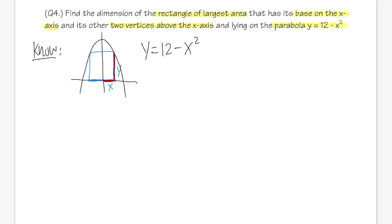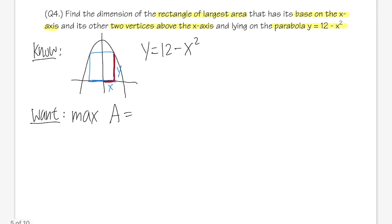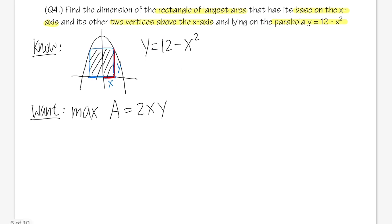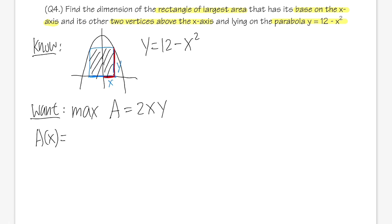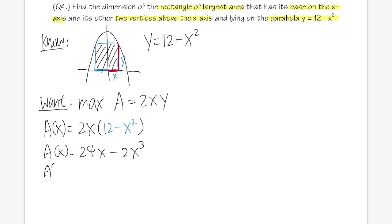The area of the rectangle: the full base is 2x (since x is only the half-width), and the height is y. So A = 2xy. Substituting y = 12 − x²: A(x) = 2x(12 − x²). Expanding: A(x) = 24x − 2x³.